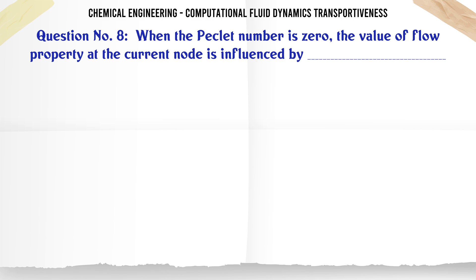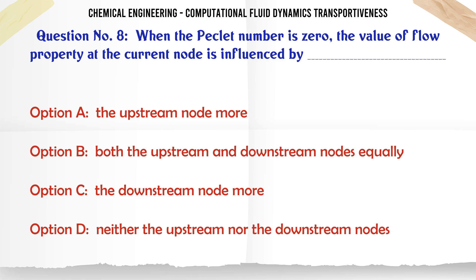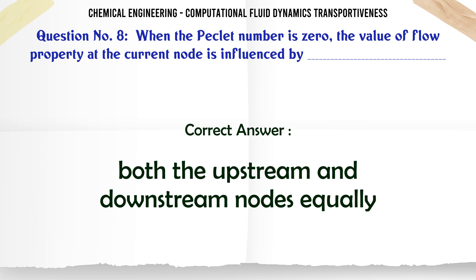When the Peclet number is zero, the value of flow property at the current node is influenced by: A. The upstream node more. B. Both the upstream and downstream nodes equally. C. The downstream node more. D. Neither the upstream nor the downstream nodes. The correct answer is B, both the upstream and downstream nodes equally.